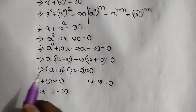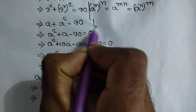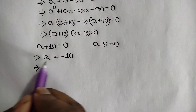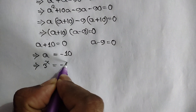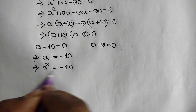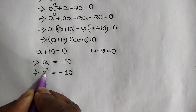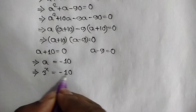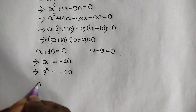Remember, a is equal to 3 to the power x. So 3 to the power x equals negative 10. But attention: 3 to the power x is always positive for any value of x, so a positive number cannot equal a negative number — this solution is rejected.